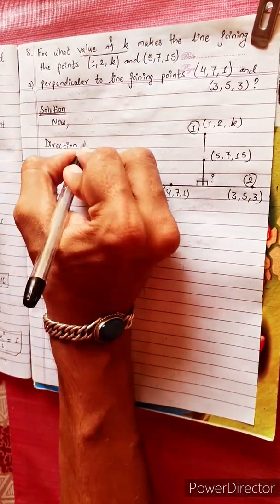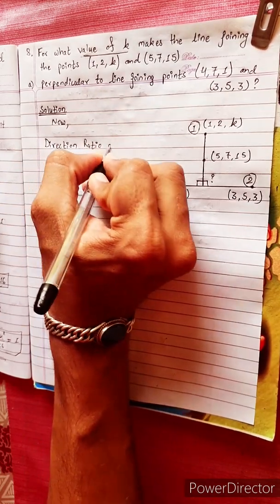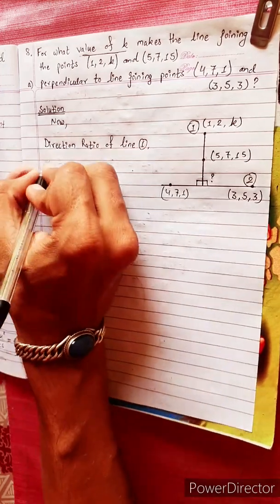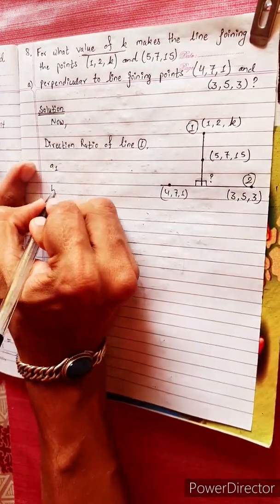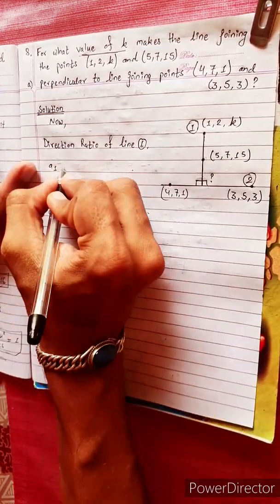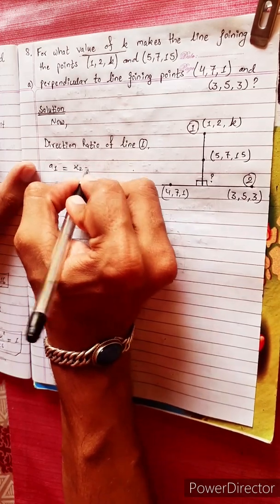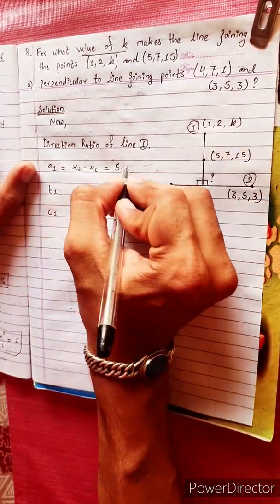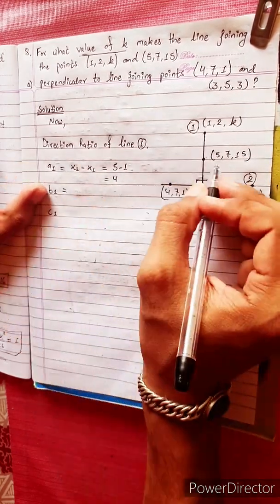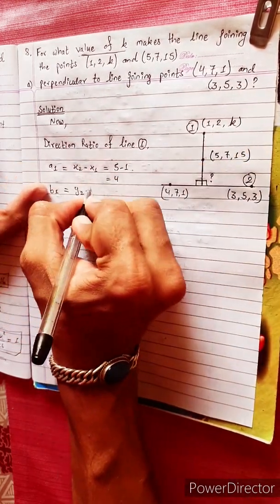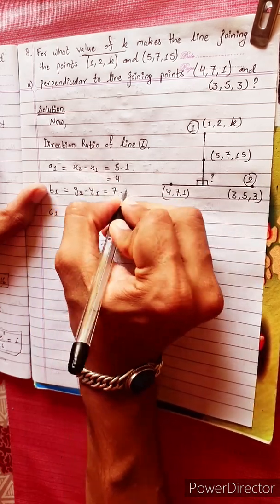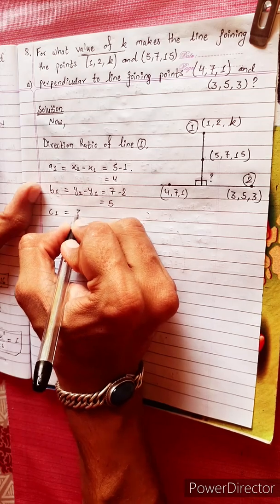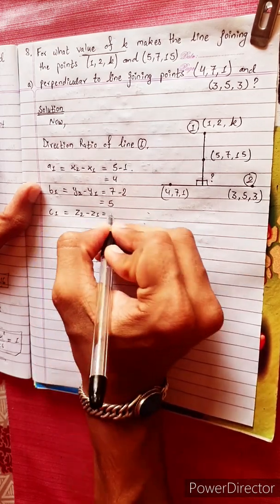Direction ratios for Line 1: a1, b1, c1. a1 equals x2 minus x1 — that is 5 minus 1, equals 4. b1 equals 7 minus 2, equals 5. c1 equals 15 minus k.